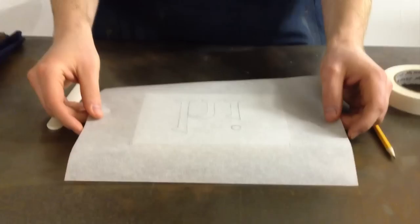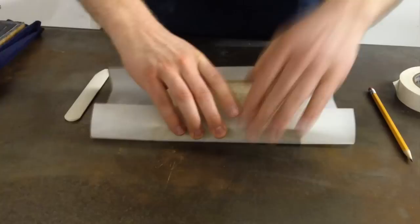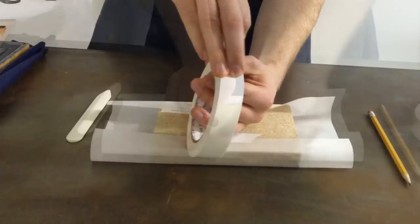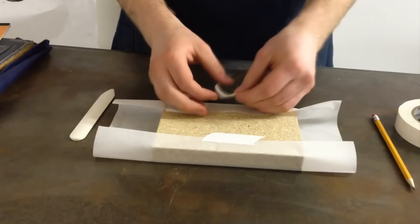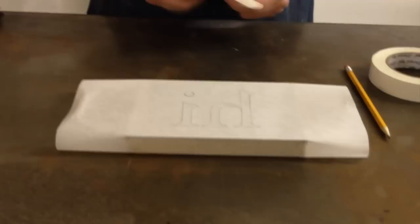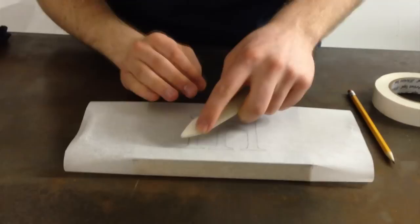Now I'm going to take my artwork and I'll place it face down onto the block. I'm doing this quickly but you'll get the idea. I have my artwork right where I want it.